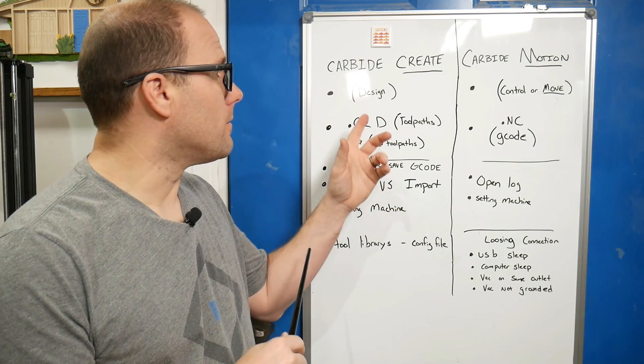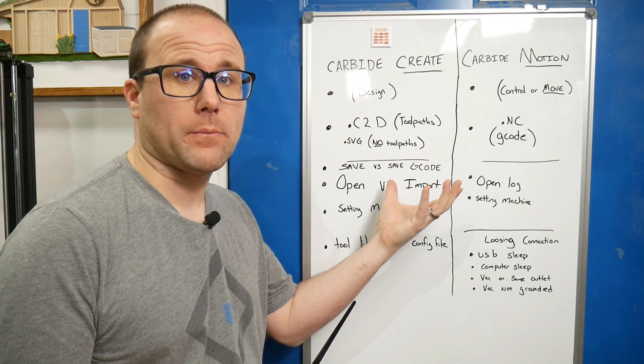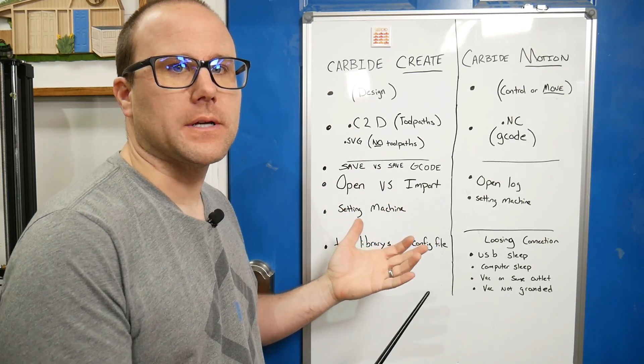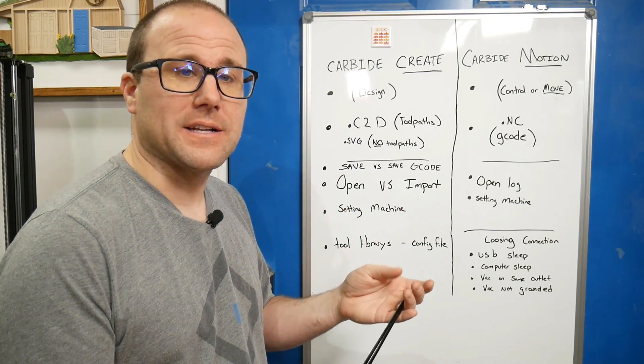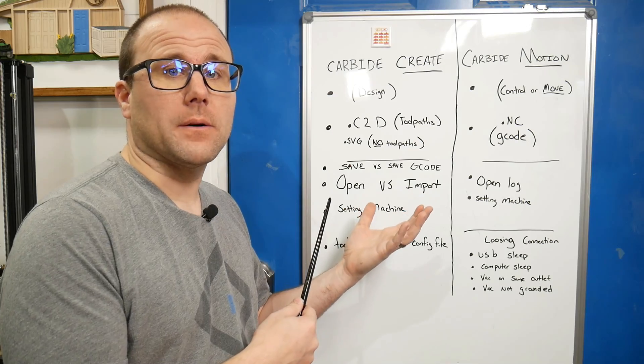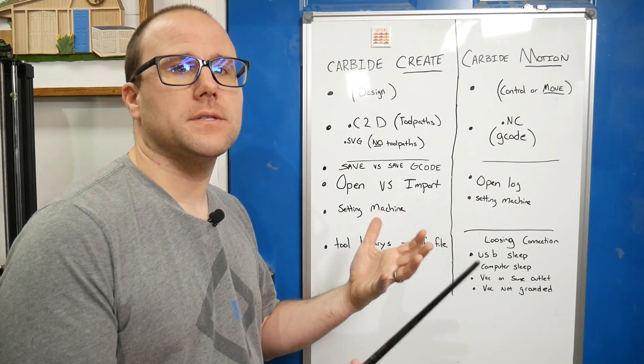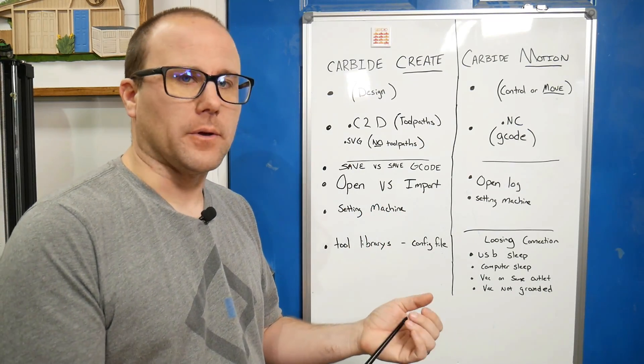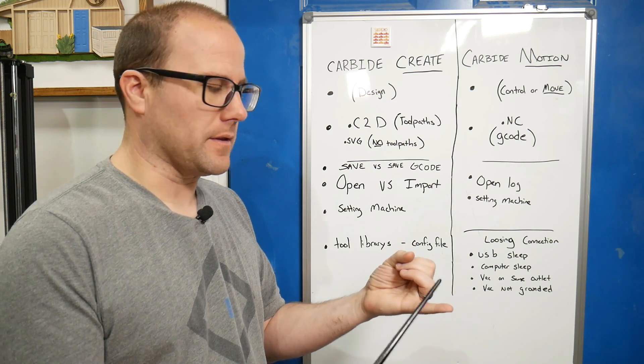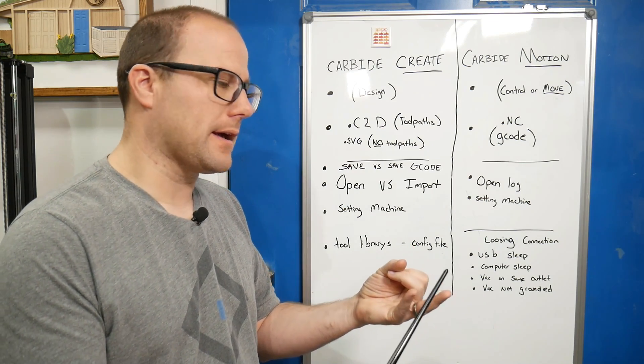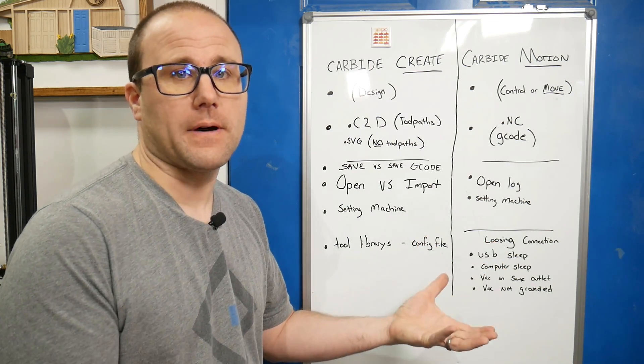The first thing I want to go over is software. I'm going to use the whiteboard to explain the differences between G-code and your design software. I'm using the Shapeoko design software, which is very similar for any other CNC. You're going to have something that drives the machine and then a design software to create the file.